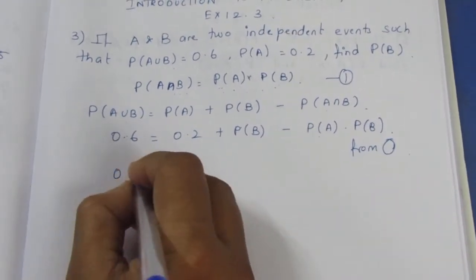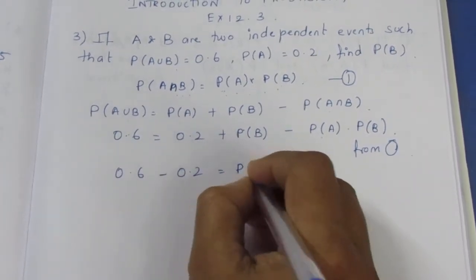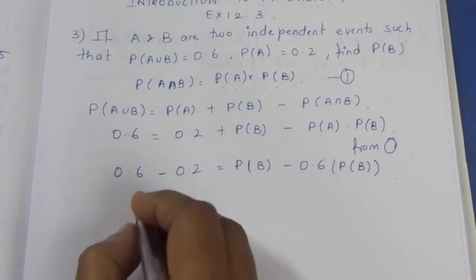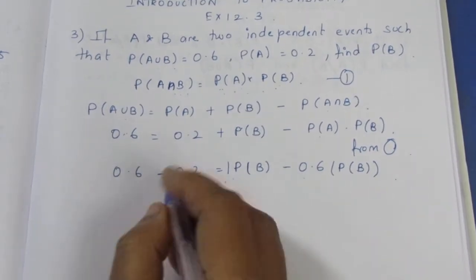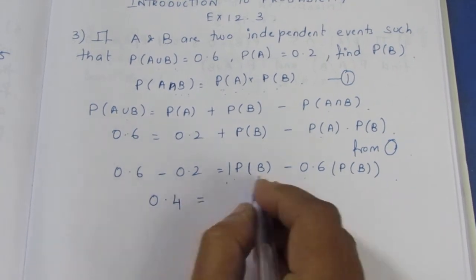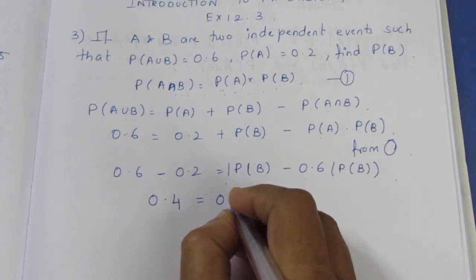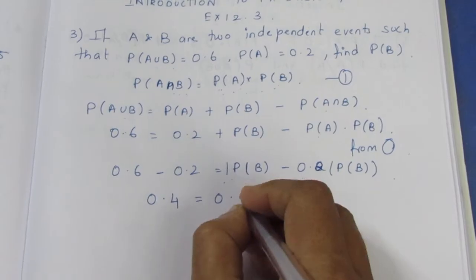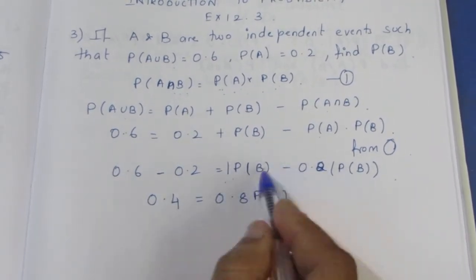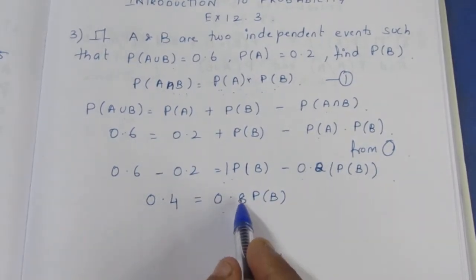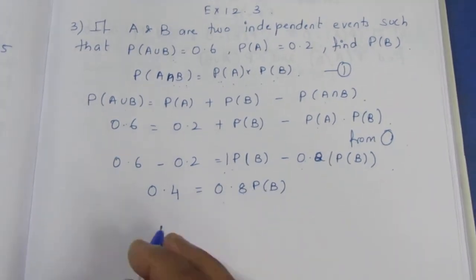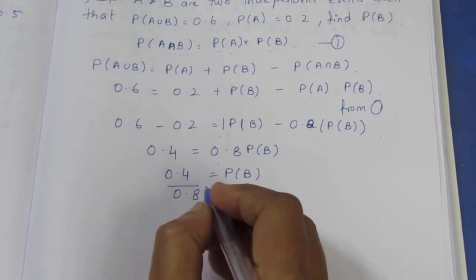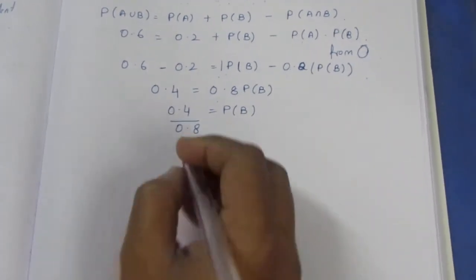Now, 0.6 minus 0.2 equals P of B minus 0.2 into P of B. So 0.4 equals P of B into 1 minus 0.2, which is P of B into 0.8. Therefore P of B equals 0.4 divided by 0.8. The 0.4 by 0.8 cancels to give 1 by 2, which is 0.5.